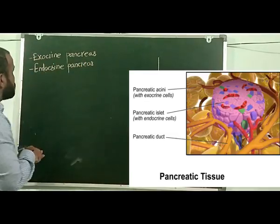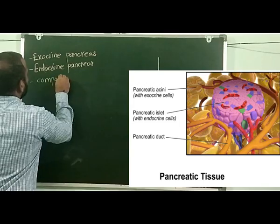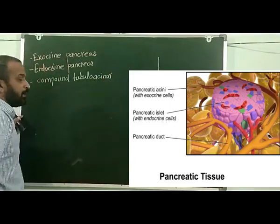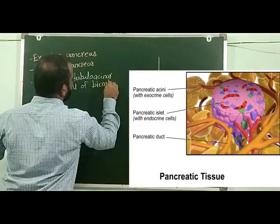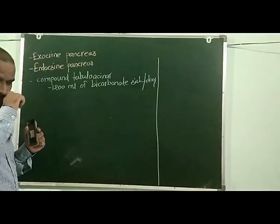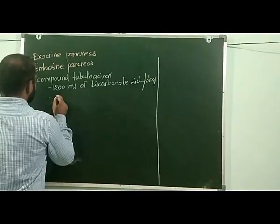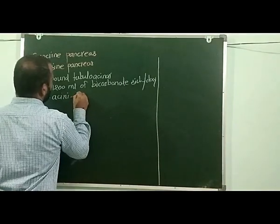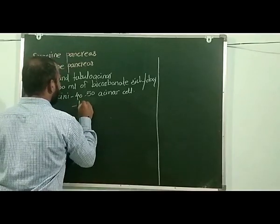First we will study the exocrine pancreas. This exocrine pancreas is in the form of a compound tubular acinar gland. It produces about 1200 ml of bicarbonate-rich fluid per day. This exocrine pancreas is in the form of pancreatic acini that consists of about 40-50 acinar cells surrounding the lumen or the central cavity.